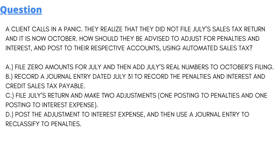So we have some options here. Option A: file zero amount for July and then add July's real number to the October filing and record a journal entry. Option B: record a journal entry dated July 31 to record the penalties and interest and credit sales tax payable.